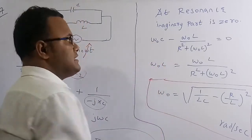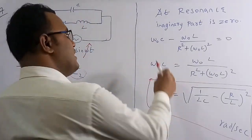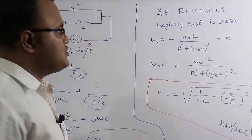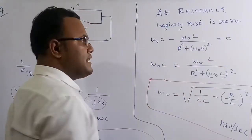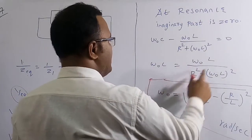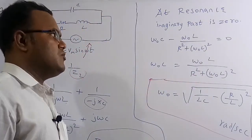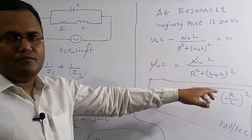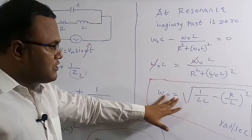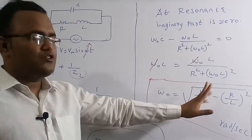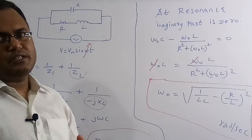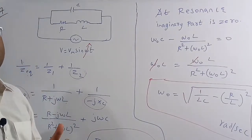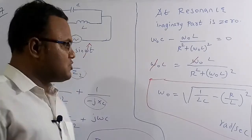Setting imaginary part to zero: ω₀C − ω₀L/(R²+ω₀²L²) = 0. Therefore ω₀C = ω₀L/(R²+ω₀²L²). Canceling ω₀ and solving, we get ω₀ = √(1/LC − (R/L)²) radians per second.